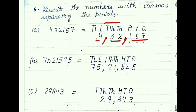Similarly, part B also. Firstly count the place: ones, tens, hundreds, thousands, ten thousands, then lakh, ten lakh. Here given period up to ten lakh, so three periods are needed — ones, thousands, and lakh. In the ones period: ones, tens, hundreds. Ones place: five. Tens place: two. Hundreds place: five. Always remember, from right to left. First period is over.